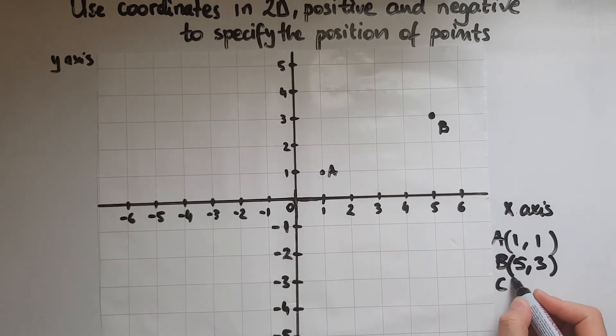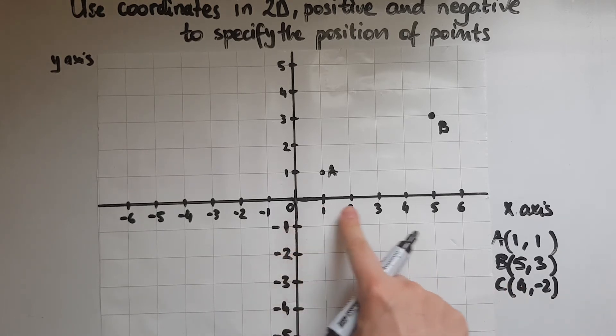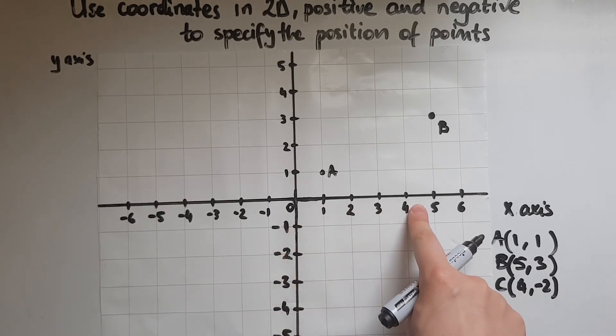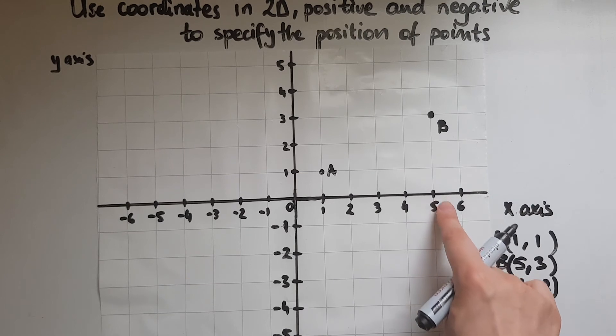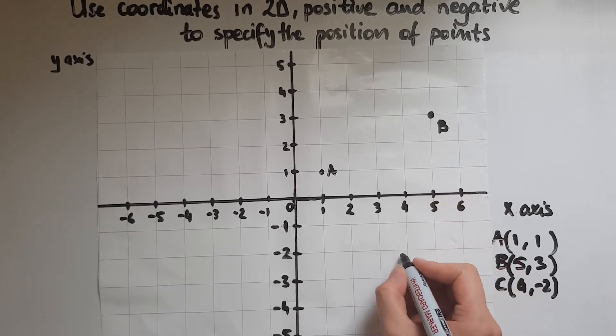Let's have a point C, which I will put down as (4, -2). So, 4 horizontally. I'll stop at 4, but I'll go down to minus 2. This is point C.